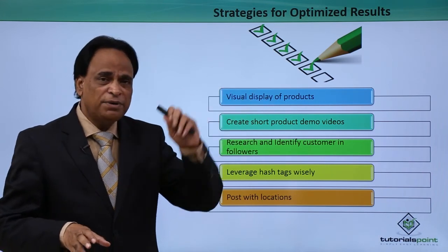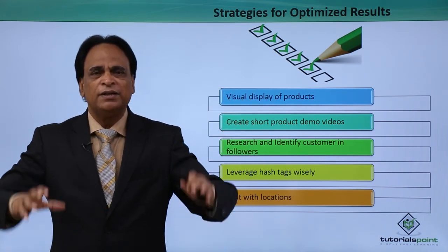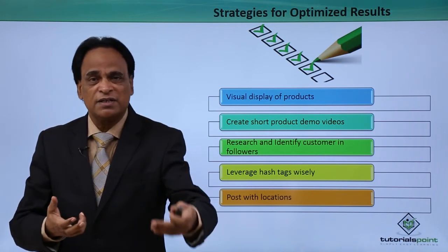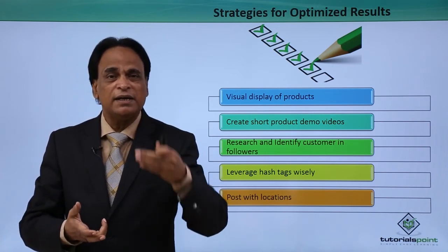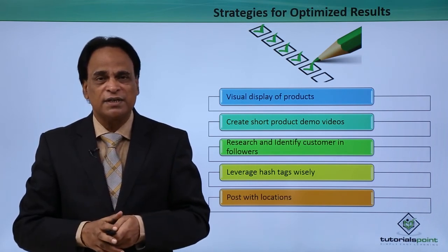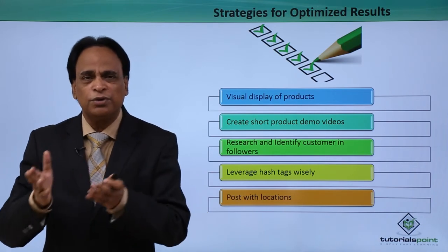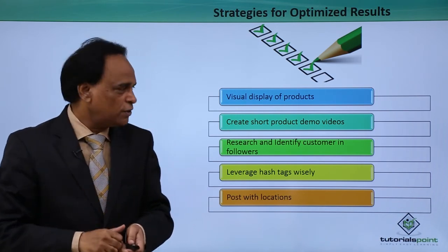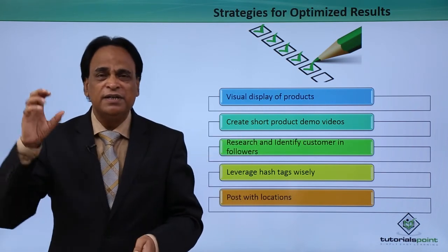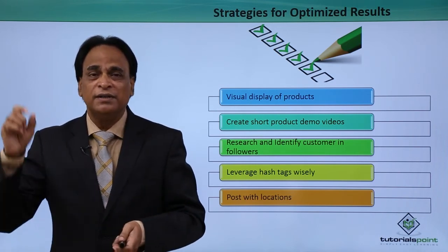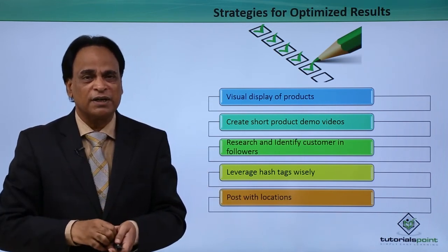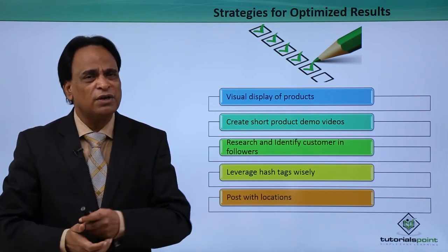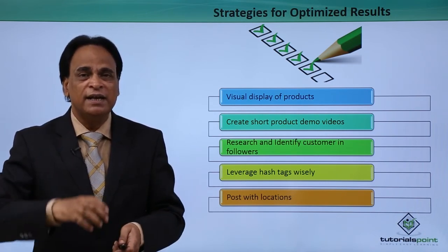Some strategies for optimized results: visual display of your products. The more visual display of your products in terms of photos and videos, the better. These photos and videos have to be customized, targeted, and personalized. As far as videos are concerned, creating a video of about 4 to 6 minutes giving a demo of your product — what this product is all about — plays a very important role in connecting with followers. Describe the features and benefits of the product and how customers can benefit from it. Videos are extensively used by many companies on social media platforms to create awareness and increase visibility of products.